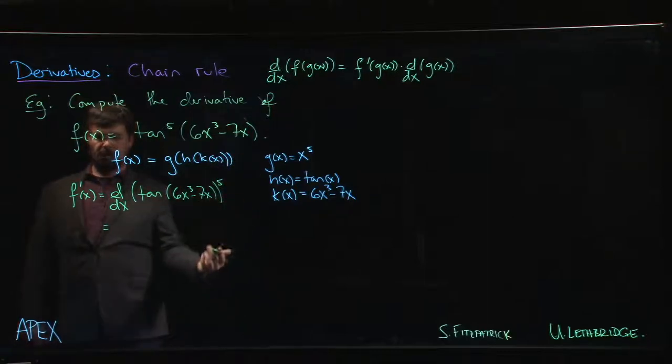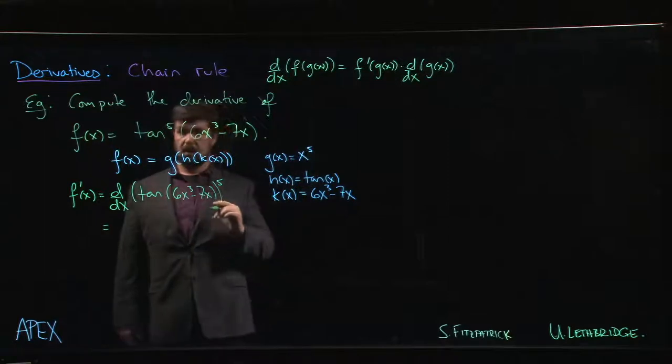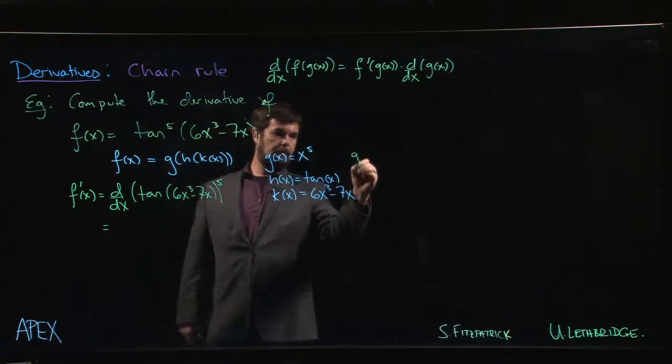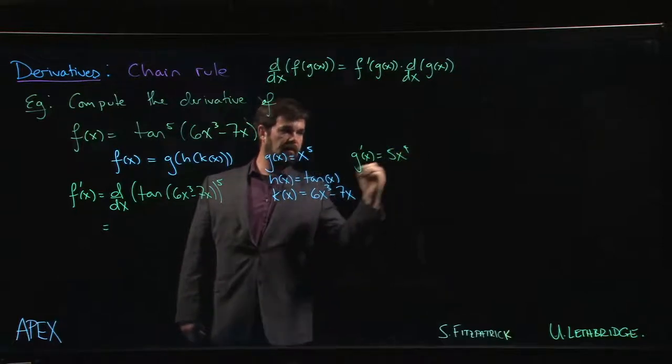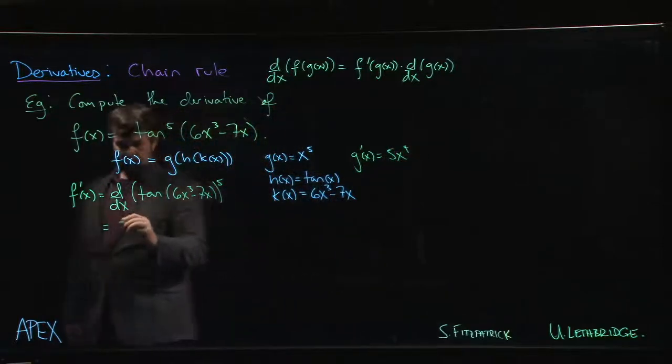The first function we see is the power function. We know that g prime—the power rule says that derivative is just 5x to the 4. So we apply that power rule. We get 5 times—